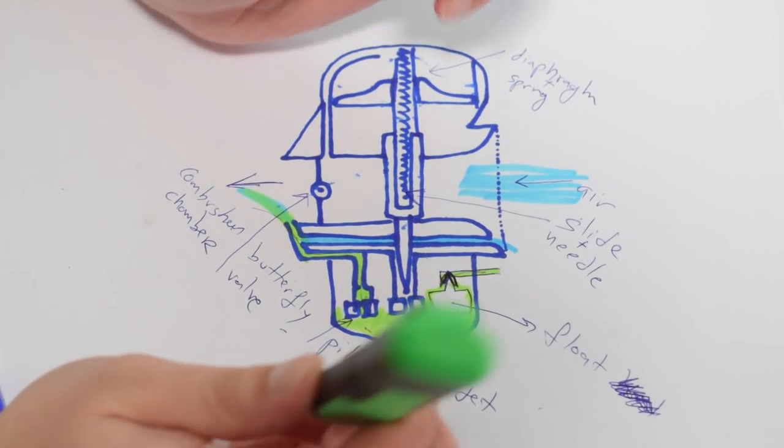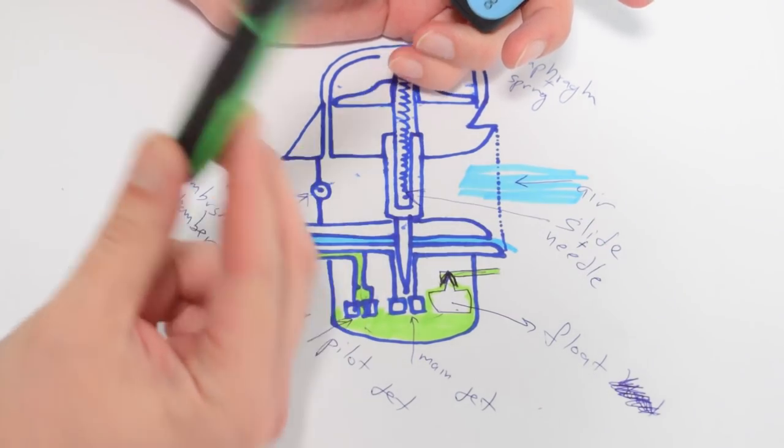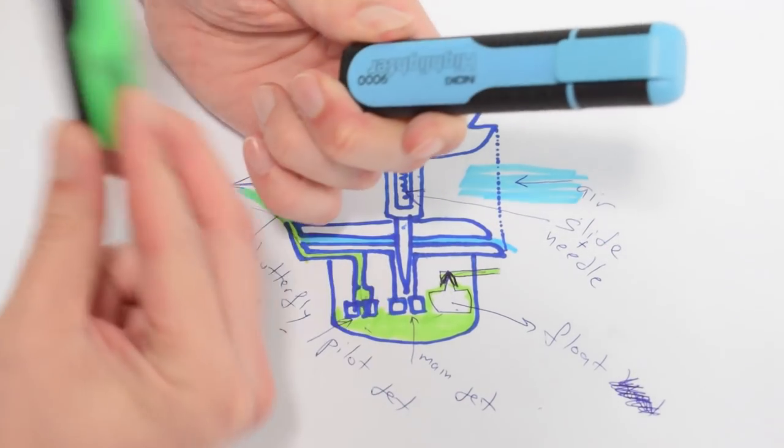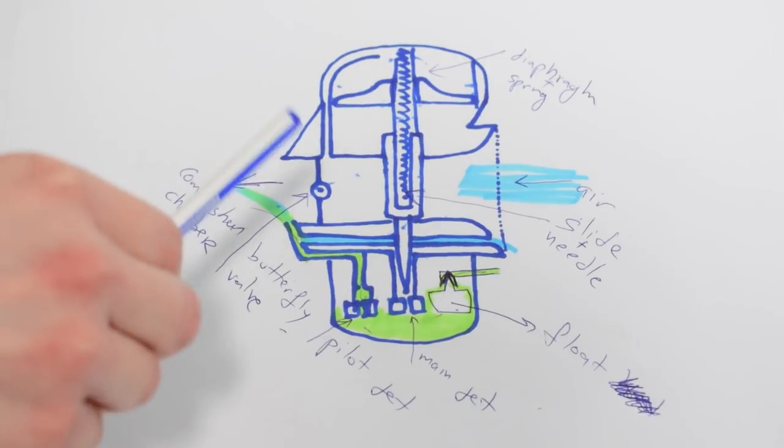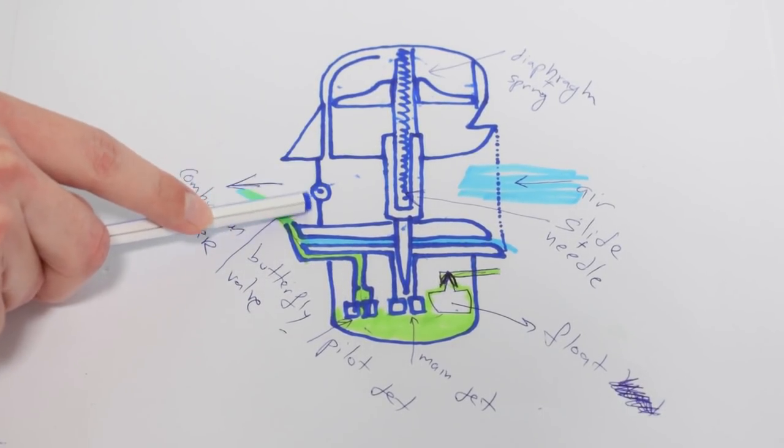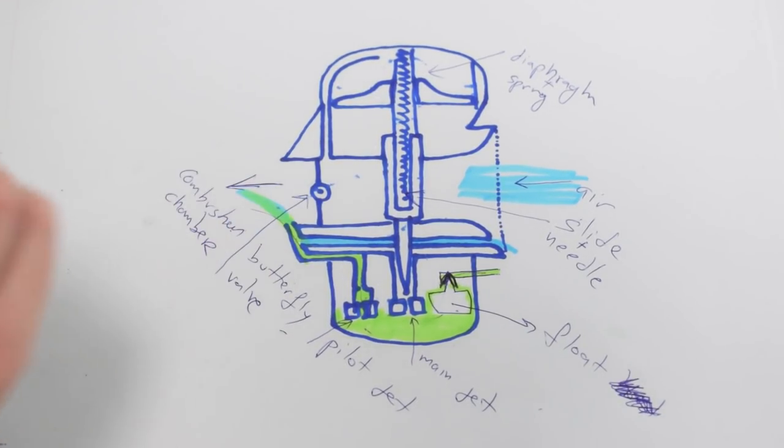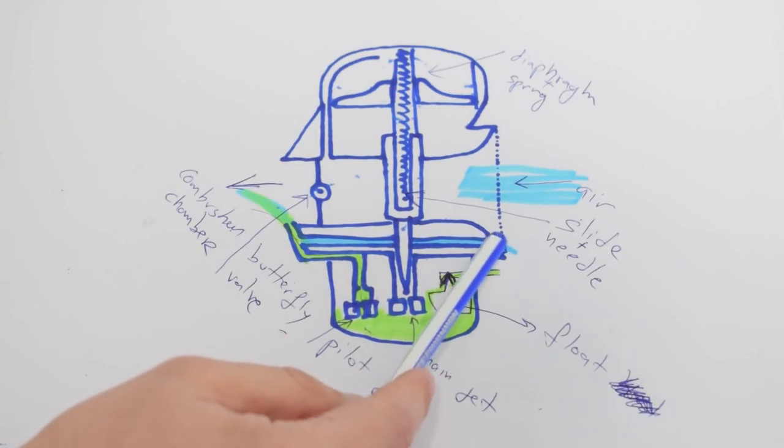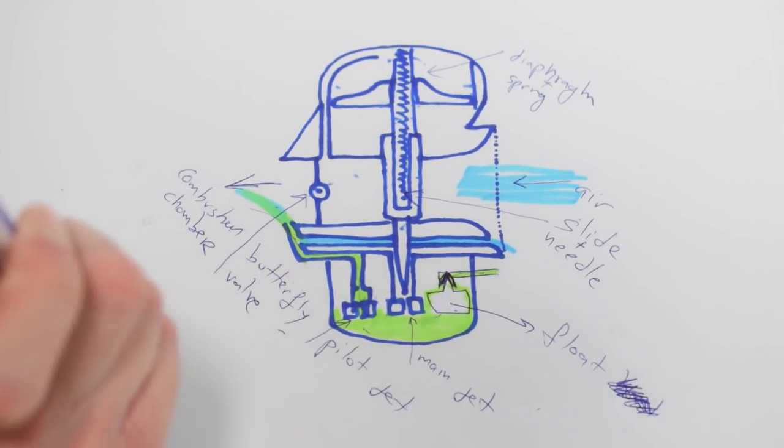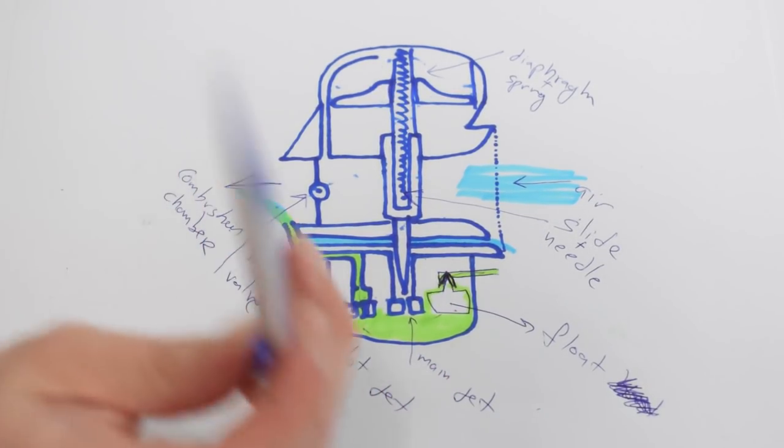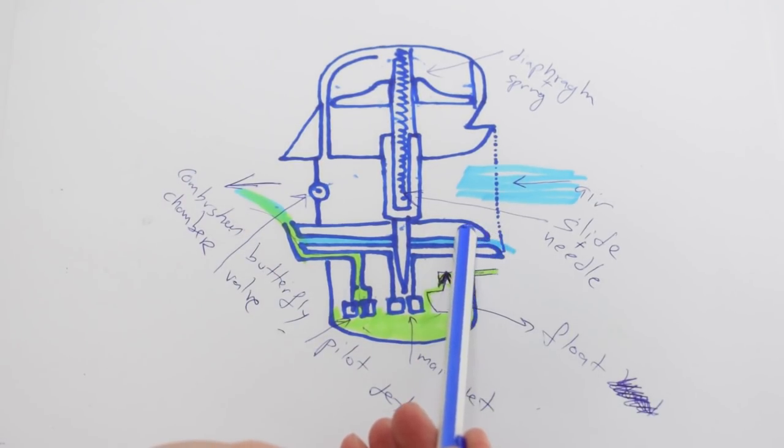Now for the purpose of this explanation our green is our fuel and our blue is our air. Now during idle our butterfly valve is closed, but there is air and fuel still coming into the combustion chamber through the carburettor and it's coming in through this little passageway here.